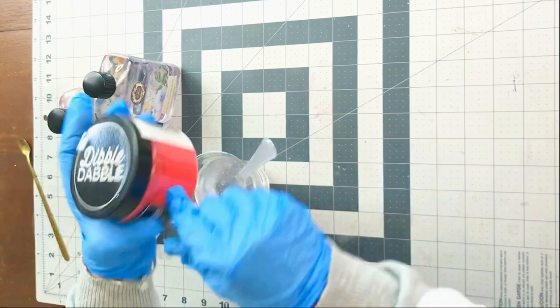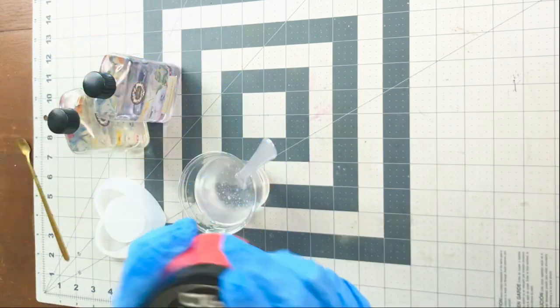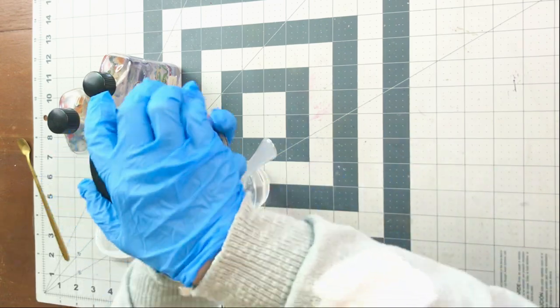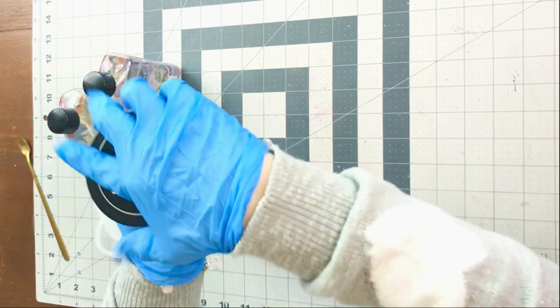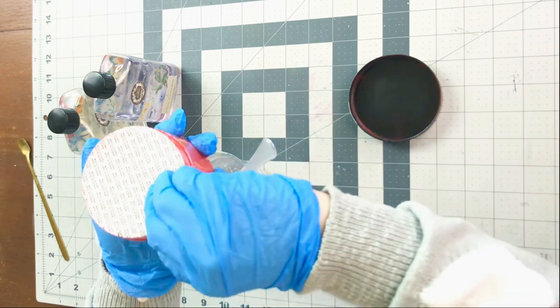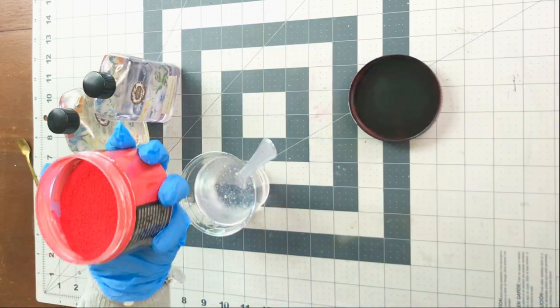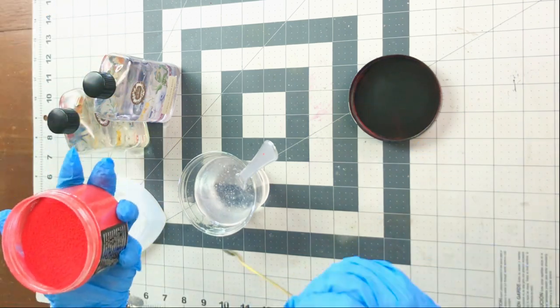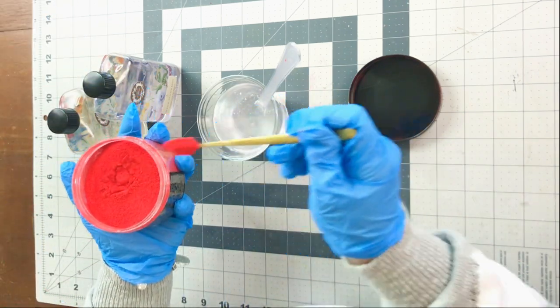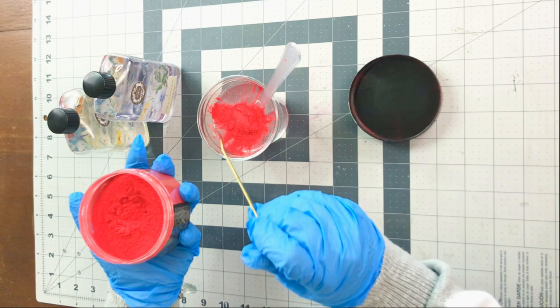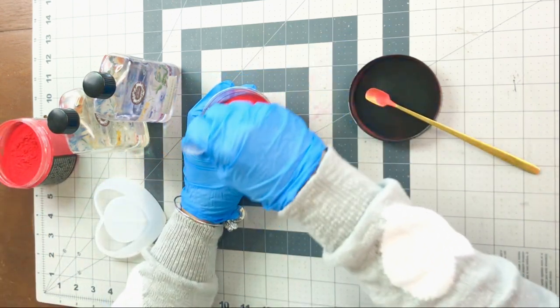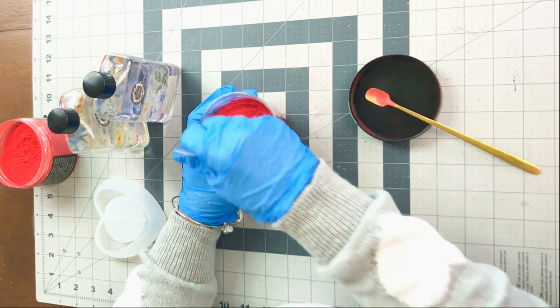But once it's completely together, you can add your color powder. And I chose this iridescent red color. The link below will have a ton of different colors that you can pick from. This one, since we were making a heart and it's sort of for Valentine's Day, I thought the red would be a really good choice.